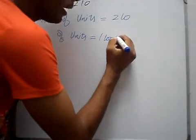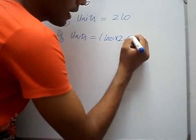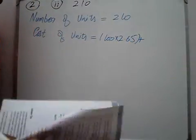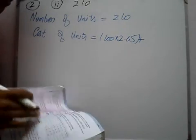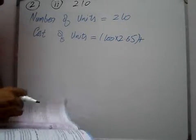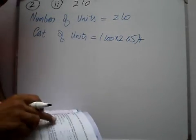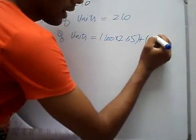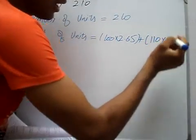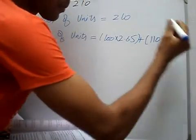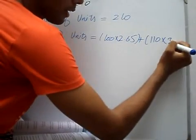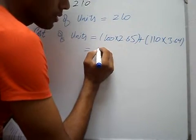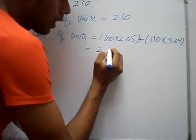Rate: 100 multiply by 2.65. Then plus remaining units: 110. Remaining units fall in the slab where rate is 3.64. So multiply 110 by 3.64. That gives us 265.